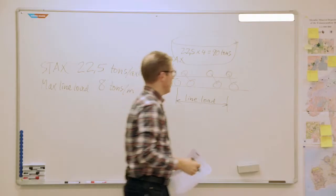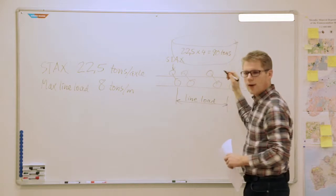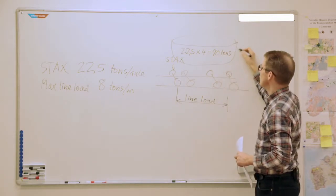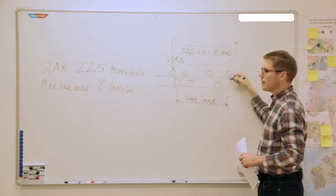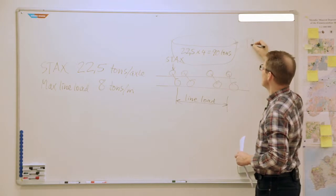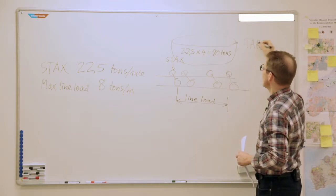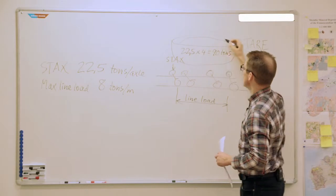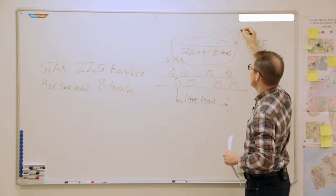This weight is the total wagon weight, so it means the weight of the wagon itself, the tare weight, and plus the weight of the payload.